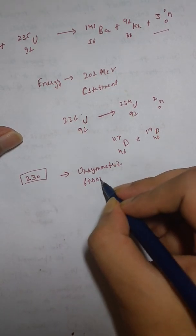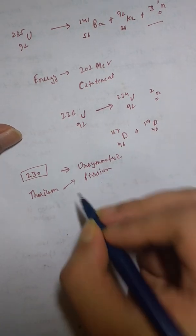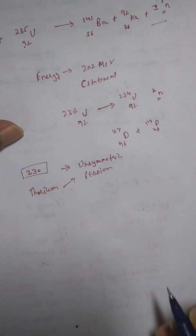So starting with thorium, the unsymmetrical fission should start.